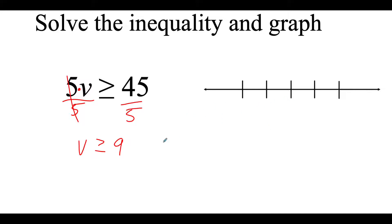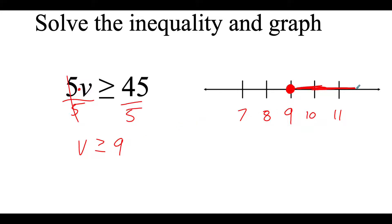I'm going to go over to my number line. I always like to take the number I'm working with and put it right in the middle. As we work to the left the numbers get smaller, and to the right the numbers get bigger. We want greater than or equal to 9, so because we include that equals sign I'm going to put a filled-in circle at 9, and then shade out to the right for all numbers greater than 9.